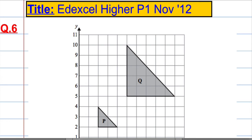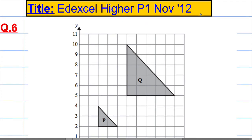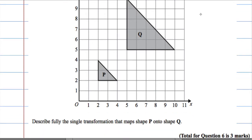So question 6. We've got a grid here with two shapes, P and Q, and we're asked to describe fully the single transformation that maps shape P onto shape Q.